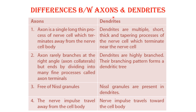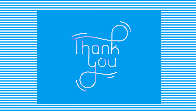The differences between axon and dendrites: the axon is a single, long, thin process of the neuron which terminates away from the cell body, while dendrites are multiple, short, thick, and tapering processes which terminate near the cell body. The axon rarely branches but ends by dividing into many fine processes called axon terminals; dendrites are highly branched in a pattern forming a dendritic tree. Axons are devoid of Nissl granules, whereas Nissl granules are present in dendrites. Impulses travel away from the cell body in the axon and towards the cell body in dendrites.